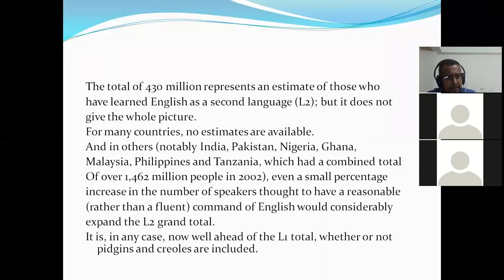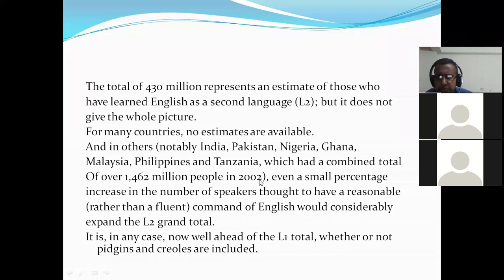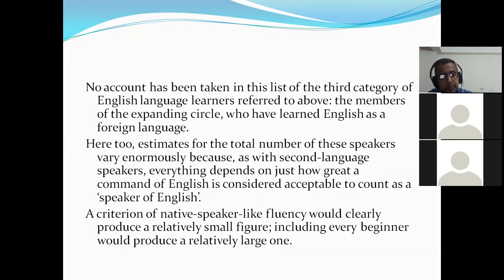The total of 430 million represents an estimate of those who have learnt English as the second language, but this doesn't give the whole picture. For many countries no estimates are available — such as India, Pakistan, Nigeria, Ghana, Malaysia, Philippines, and Tanzania — which had a combined total of over 1,462 million people in 2002. Even a small percentage increase in the numbers of speakers with a reasonable command of English could greatly expand the second language total. Pidgin and Creole should be included in the total number of users of English language worldwide.